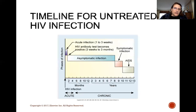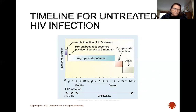This slide shows a timeline for untreated HIV infection. It goes from acute to chronic phases, covering 0 to 13 years. The typical lifespan for untreated HIV is 0 to 13 years. That timeline is different for treated HIV, and it is changing all the time as treatment improves.